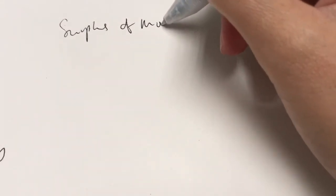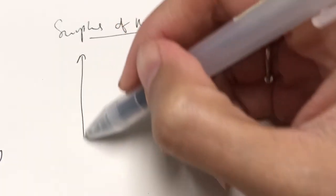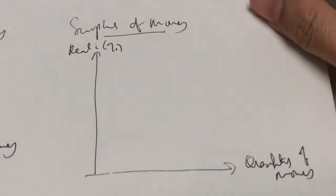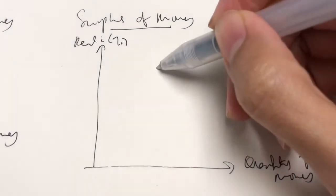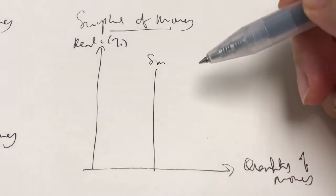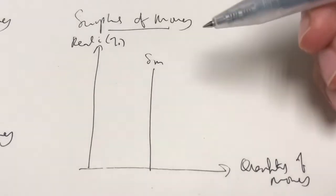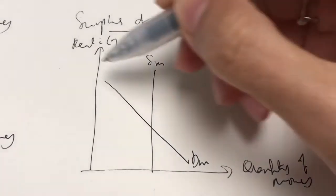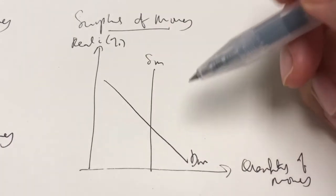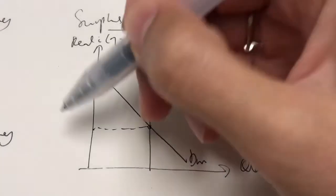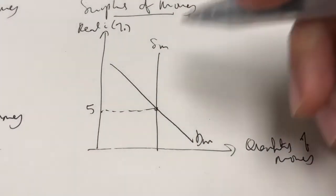Now let's take a look at the situation where we have a surplus of money. Just like before, we start with an empty XY plane — here's the quantity of money and here is our real interest rate expressed in percentage. Here's our initial supply of money, a vertical line, because we assume the supply of money is independent from the interest rate and determined by the central bank. And here is the demand for money, which is downward sloping. Our first equilibrium interest rate is at 5% with a money supply of $200 billion.